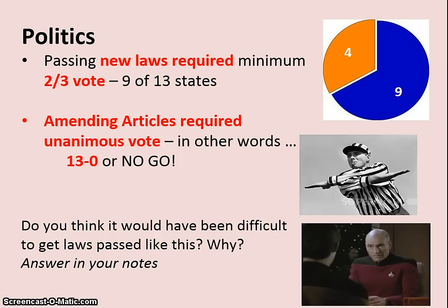Then there's the issue of politics. According to the Articles of Confederation, no new laws could be passed without a minimum two-thirds vote, requiring 9 out of 13 states. And amending the Articles — making any changes to them — required a unanimous vote: 13-0 or no-go. Knowing the different regions and states from colonial times — some large, some small, some agricultural, some with industry, some with slaves and some without — do you think it was reasonable that all of those states could come together to agree unanimously, much less reach a two-thirds vote? Think about why that might have been a difficult way to pass laws and make an answer in your notes.